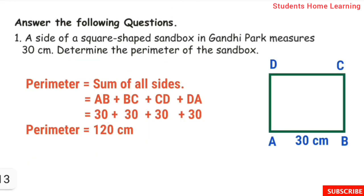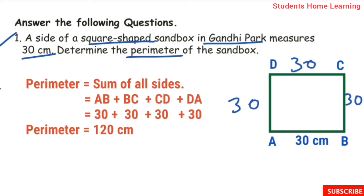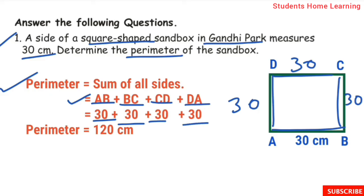Answer the following question. A side of a square-shaped sandbox in Gandhi Park measures 30 cm. Determine the perimeter of the sandbox. Since it is a square shape, all sides are equal at 30 cm. Formula — perimeter is equal to sum of all sides: AB plus BC plus CD plus DA equals 30 plus 30 plus 30 plus 30. Answer: 120 cm. Perimeter is equal to 120 cm.